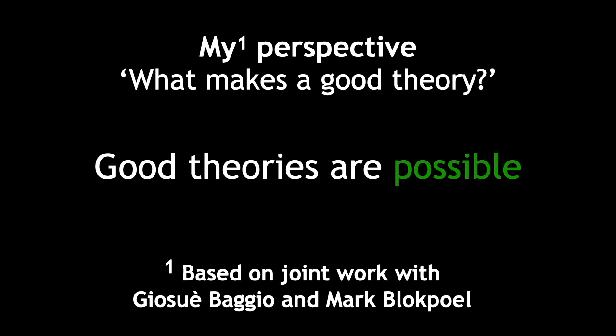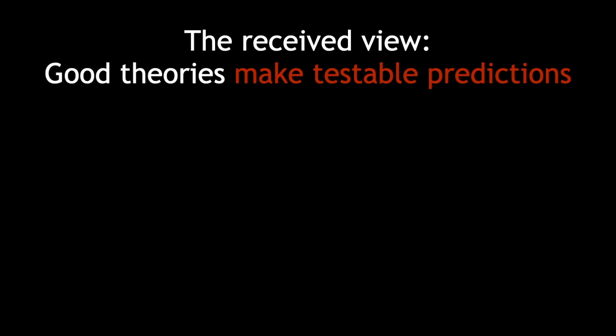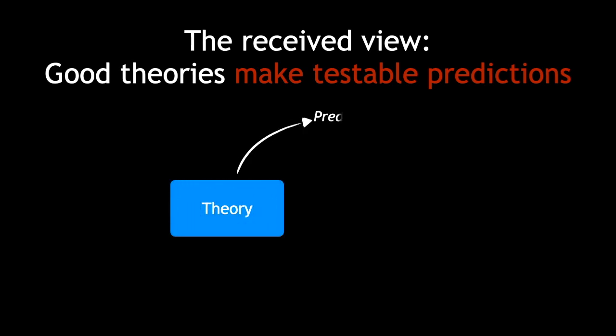To illustrate this, let me pose as a contrast what I take to be the more received view. The received view in psychology is that good theories make testable predictions. This fits a view of science as progressing solely via the empirical cycle. That is, the iterative process of deriving predictions and testing them, and then revising theories according to the outcomes of such tests. This view has led to a relative neglect of good theory building prior to testing. There are at least two problems I see with this received view.